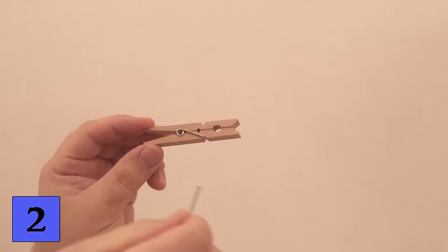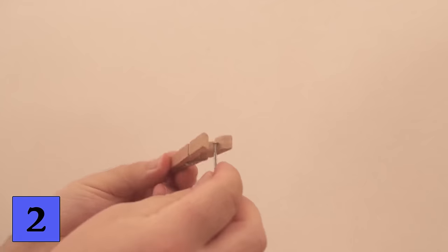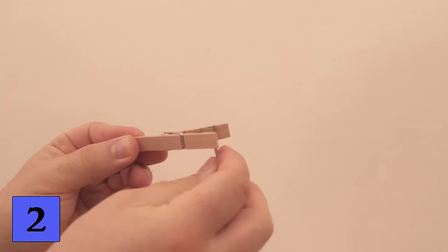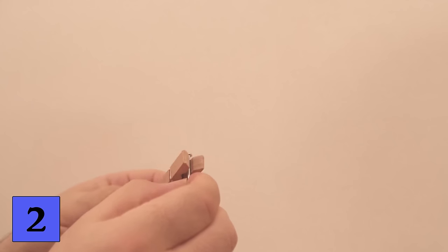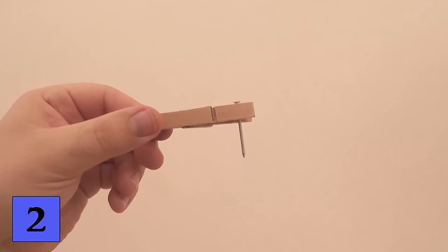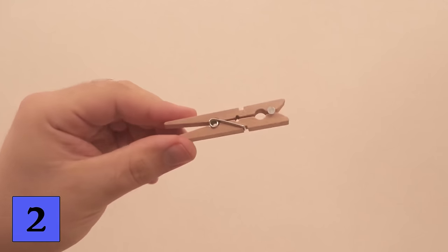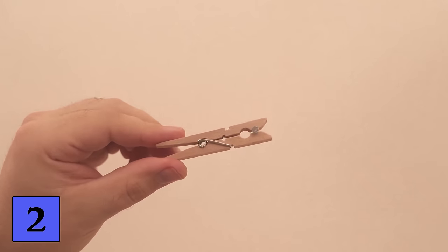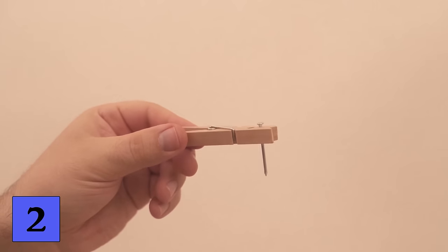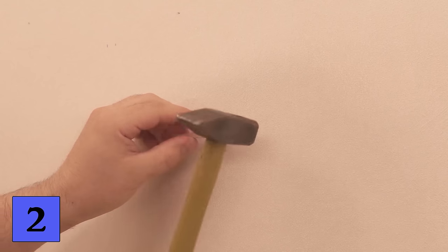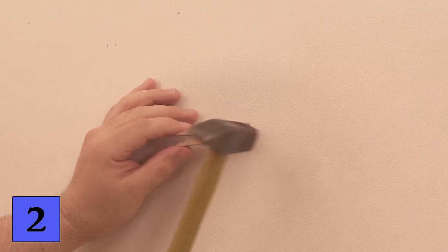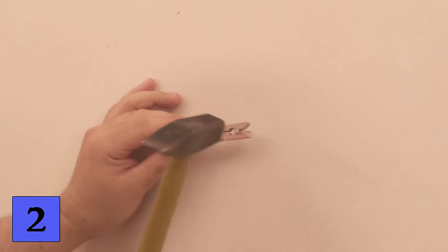You can now clamp the nail in the cloth peg and then hold it at the spot on the wall where you want to hammer it in. Now you hold the cloth peg here at the back end, move the nail to the right position, and now you can drive it into the wall without hitting your fingers. Instead of your fingers, the cloth peg is now directly around the nail. So if you miss, you won't hit your fingers, you'll just hit the cloth peg, which is no big deal.